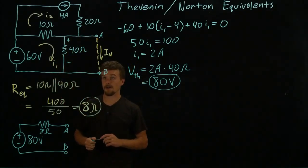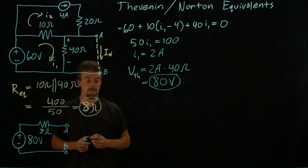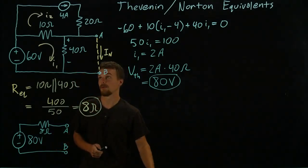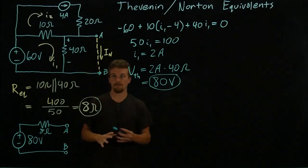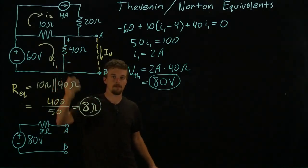So when we're doing our analysis to find I_Norton, we can pretty much forget that this resistor exists because if we did it all out we'd find that there was no current flowing through there.